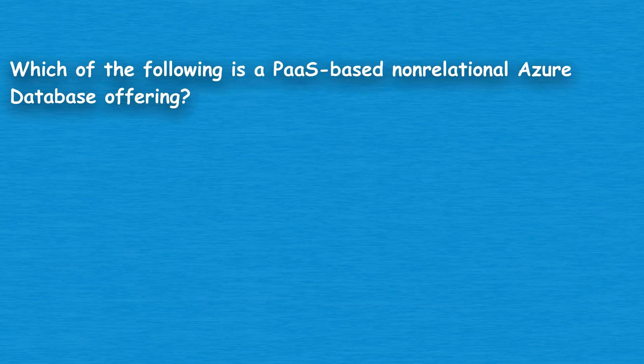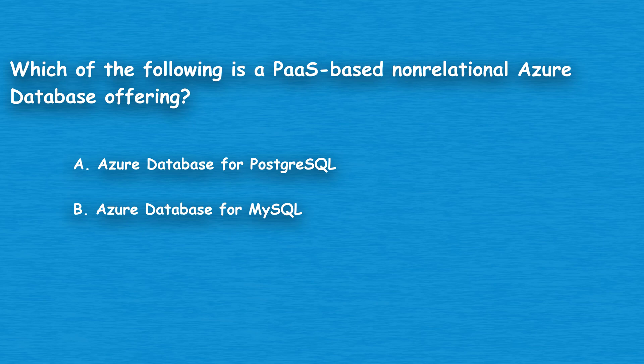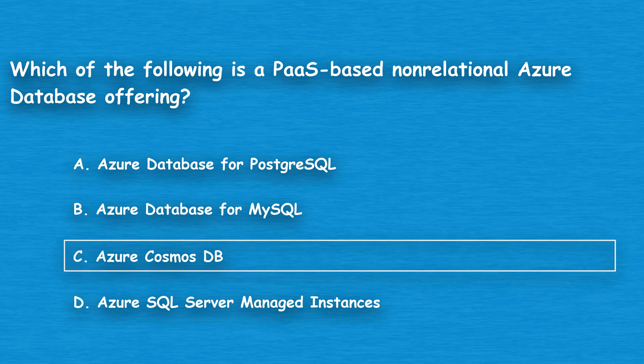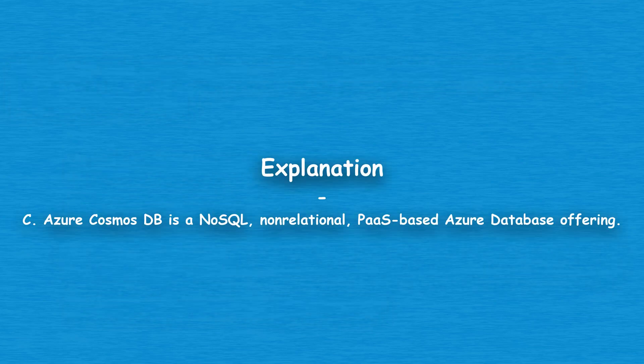The next question: which of the following is a PaaS-based non-relational Azure database offering? Option A: Azure Database for PostgreSQL. Option B: Azure Database for MySQL. Option C: Azure Cosmos DB. Option D: Azure SQL Server Managed Instances. The correct answer is Option C, Azure Cosmos DB. Azure Cosmos DB is a NoSQL, non-relational, PaaS-based Azure database offering.